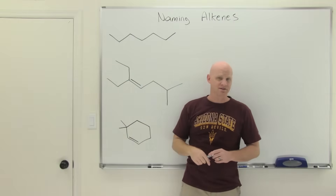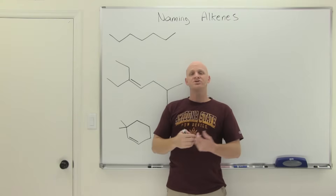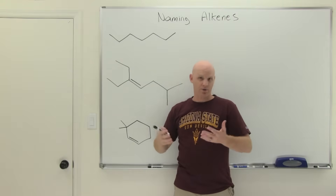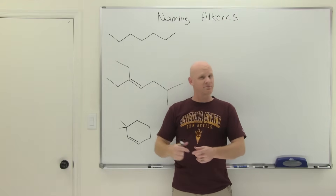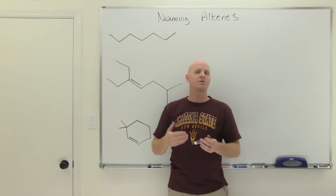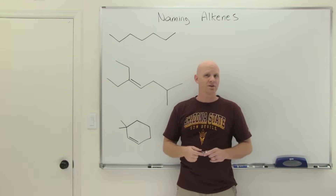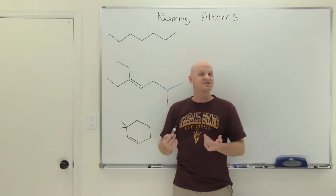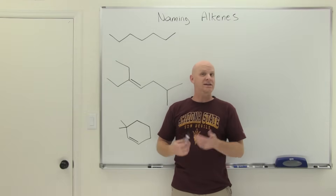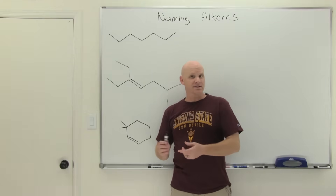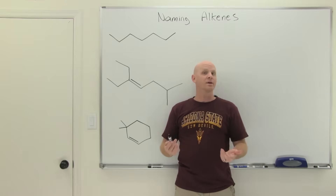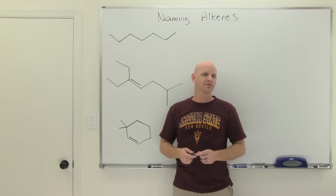Naming alkenes is going to be the topic of this lesson. We have a whole chapter on alkene reactions, but we're going to learn how to name them first. We're going to cover all the rules for naming alkenes, talk about different stereoisomers and the EZ system of nomenclature, and then name polyalkenes at the end of this lesson as well.